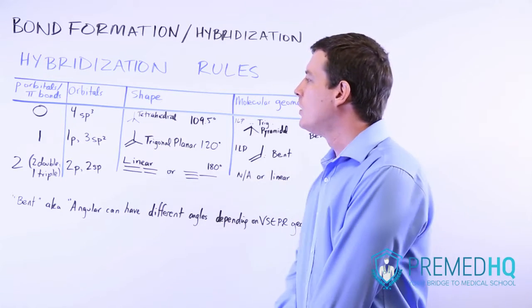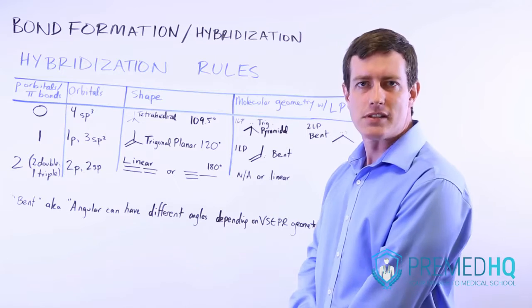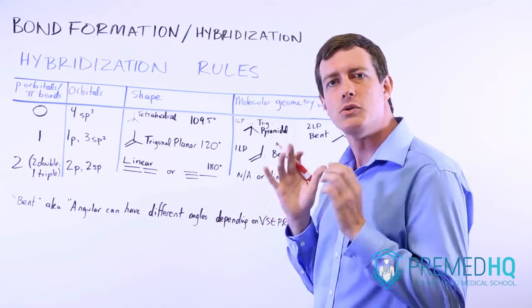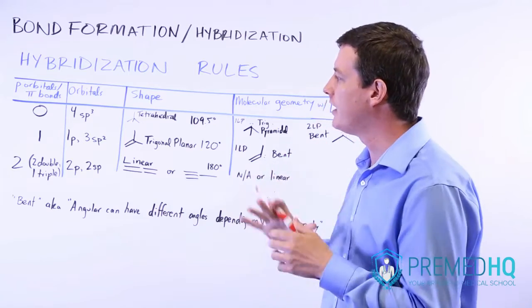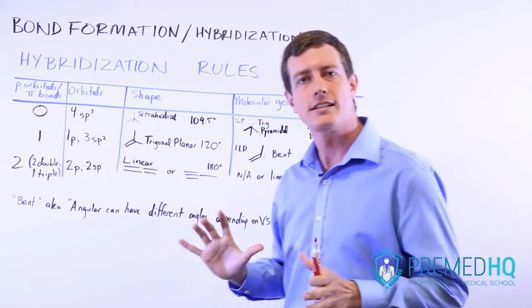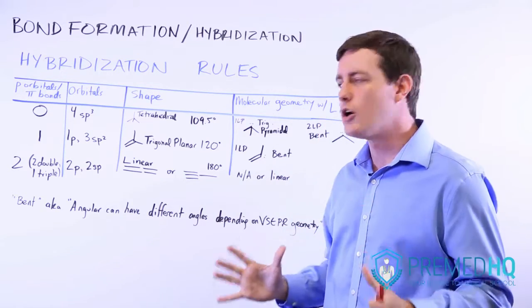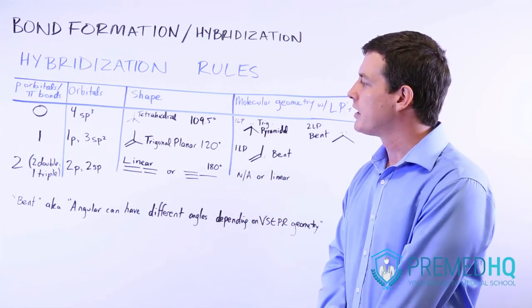The bottom line, whenever you're thinking about hybridization questions, is to figure out how many p orbital clouds do you need to retain and do you need to keep intact. And then as soon as you figure out how many p orbitals you will need, whatever is left over can hybridize.